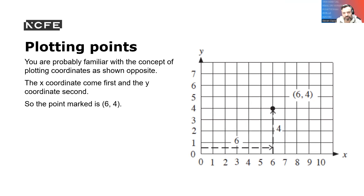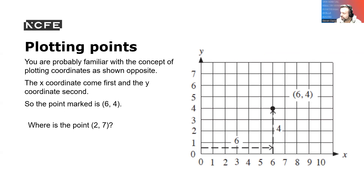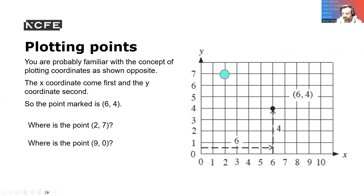The x coordinate comes first and the y coordinate comes second. So we go along the corridor and up the stairs — that's how we were taught at school. So the point six four: we come along six along the corridor, up the stairs, we're there. Where is point two seven? Along the corridor and up the stairs, we're there. Where is nine zero? We go along the corridor and up the stairs.